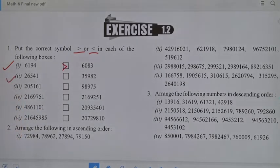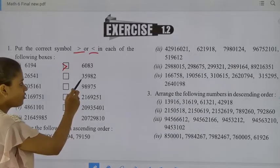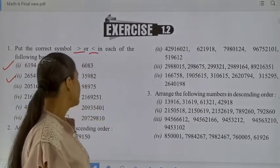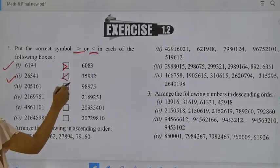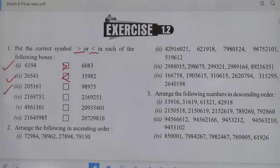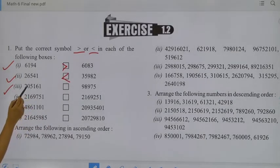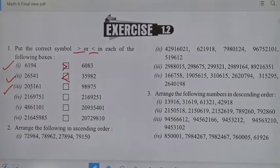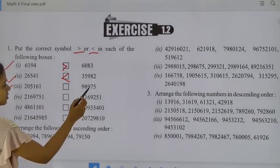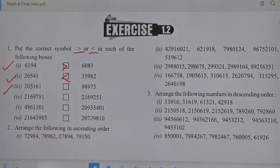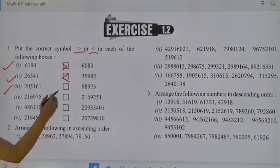Now move to the next: that is 26,541 and 35,982. Which one is the greatest number? That is 35,982. Now move to the next one — this number has 1, 10, 100, 1000, 10,000, and lakh: that is 2,5161. And this has 1, 10, 100, 1000, 10,000: that is 98,975. Which one is greatest? That is 2,5161.